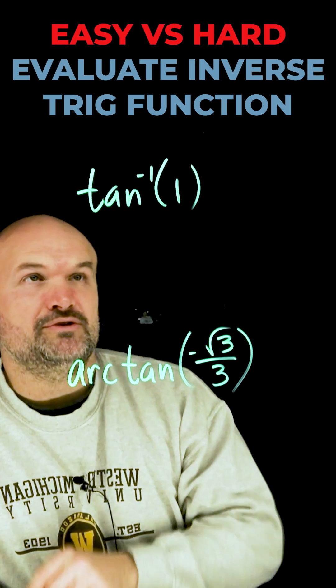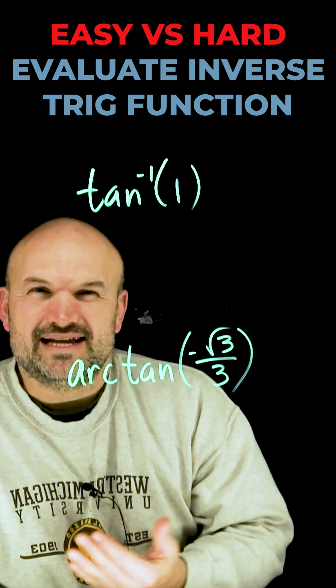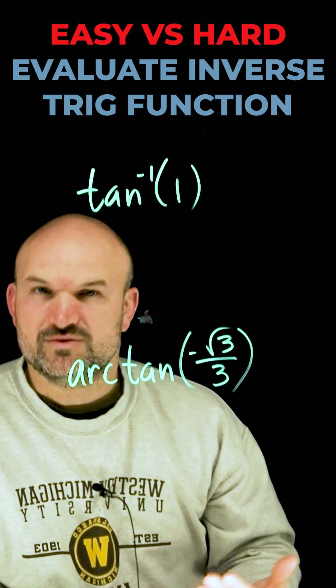Now what we're going to do to be able to evaluate, starting with the easier one, is understanding what exactly we're trying to find. So when I have the tangent inverse of 1, what exactly does 1 represent?